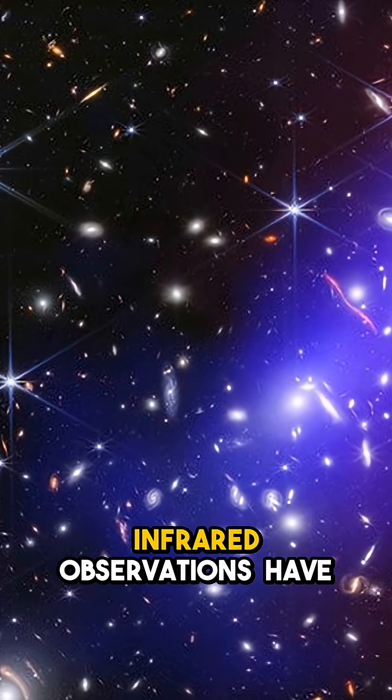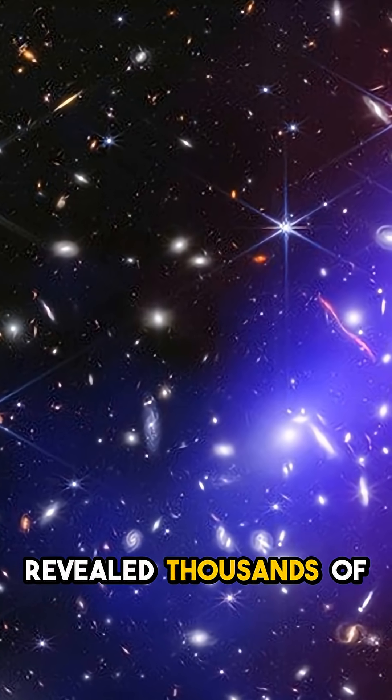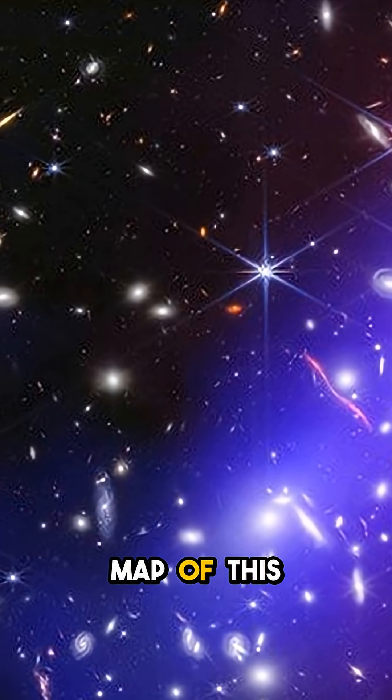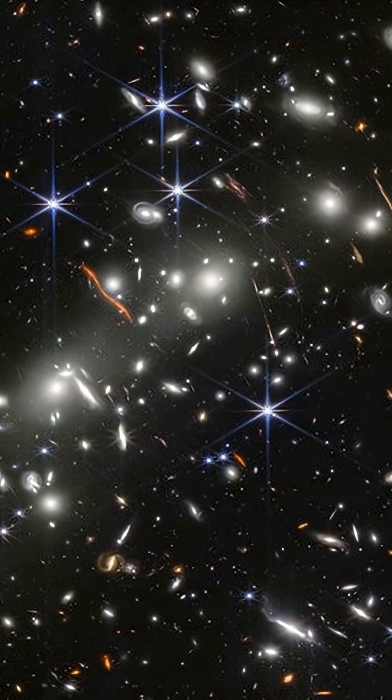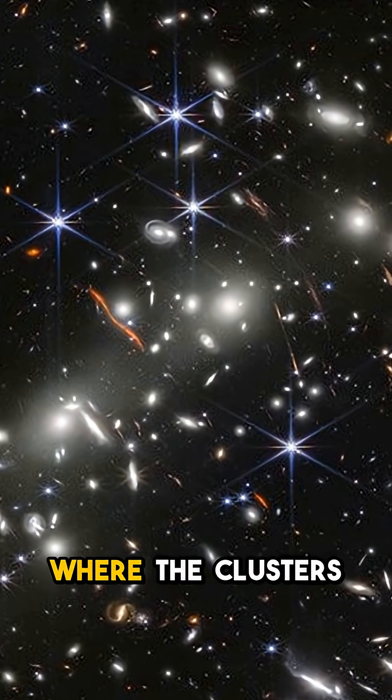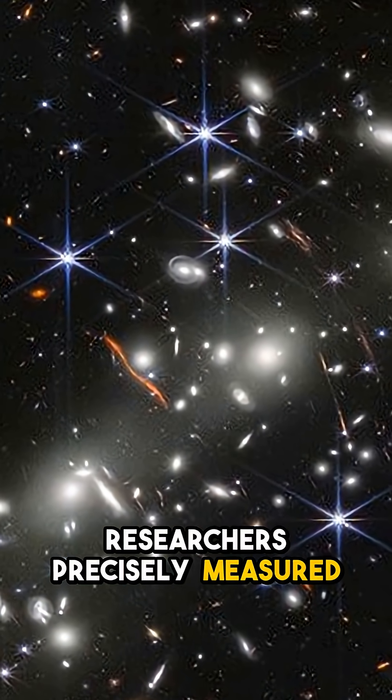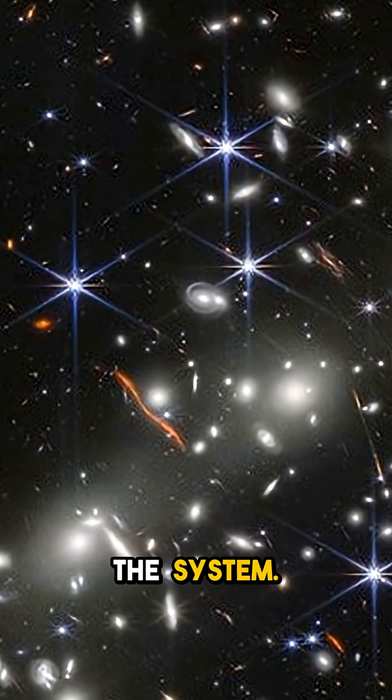Webb's unprecedented near-infrared observations have revealed thousands of extremely faint and distant galaxies never seen before, creating the most detailed map of this cosmic wreckage to date. Using gravitational lensing, where the clusters act like cosmic magnifying glasses, researchers precisely measured both visible and invisible matter throughout the system.